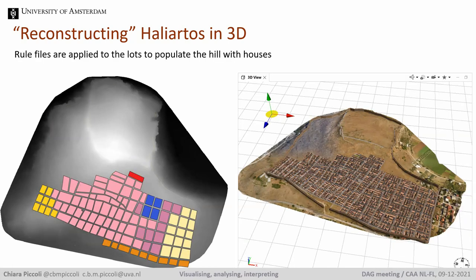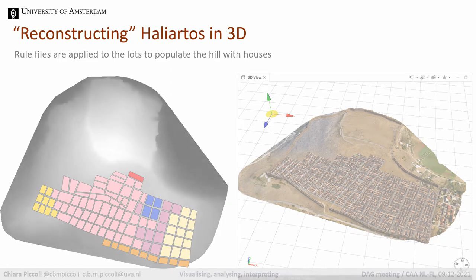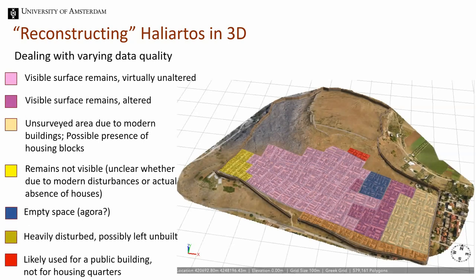The roof rule for domestic architecture is applied on the lots to populate the hill with houses. Other rule files, also created for the Koronia case study, are used to create the city walls in the lower town and to texture the streets. The archaeological remains at Haliertos are better legible than at Koronia, but we are still confronted with varying data availability, quality and interpretation. This slide visualizes what kind of evidence we have on site. We want to incorporate and visualize this uncertainty in our 3D model, and the rule-based modeling strategy allows us to account for varying data quality and create alternative hypotheses to visualize various scenarios.